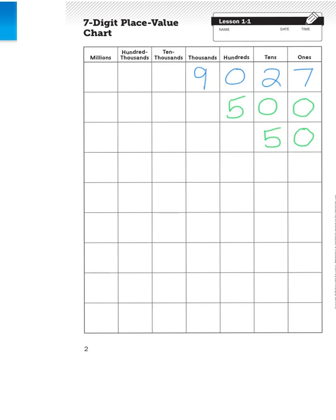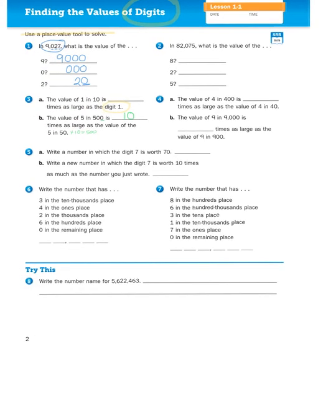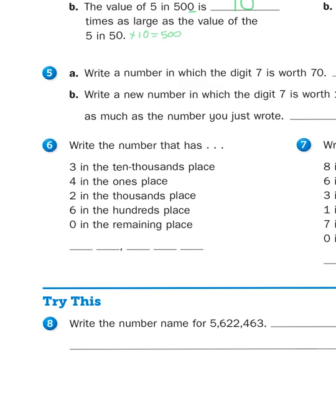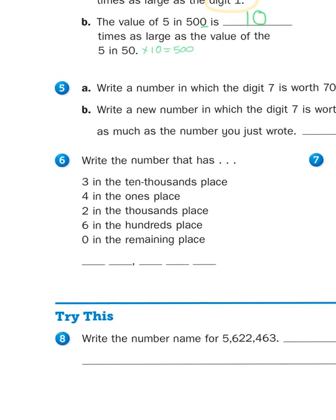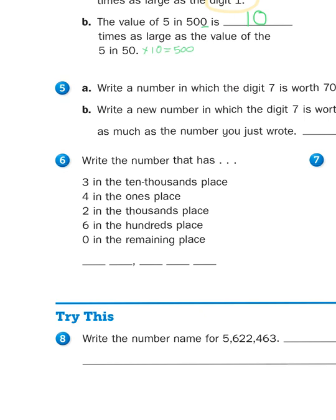The fifth space from the right, I'm going to put my 3 in the ten thousands place. I'm going to do it right here. It says put the 4 in the ones place. Well, the ones is all the way to the right.